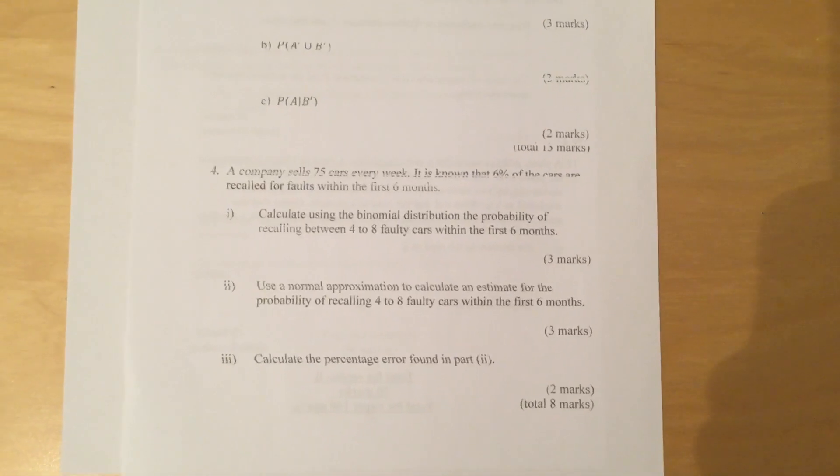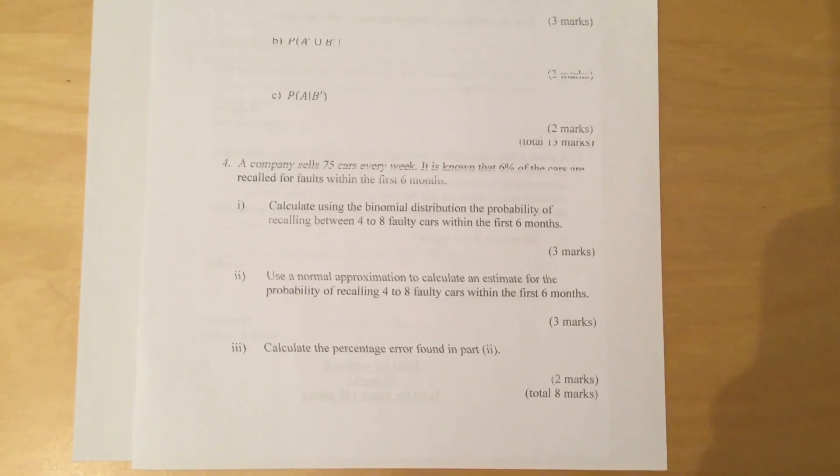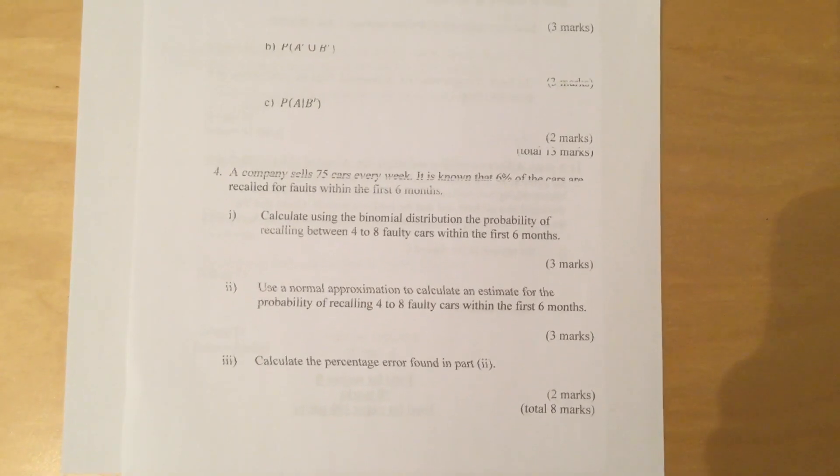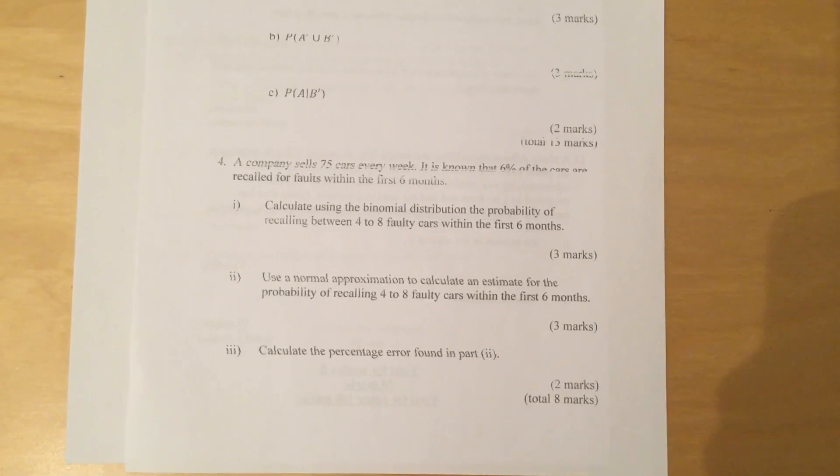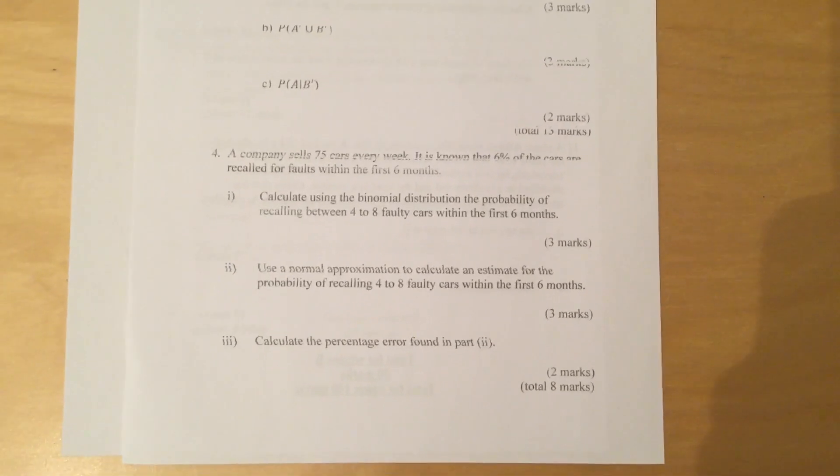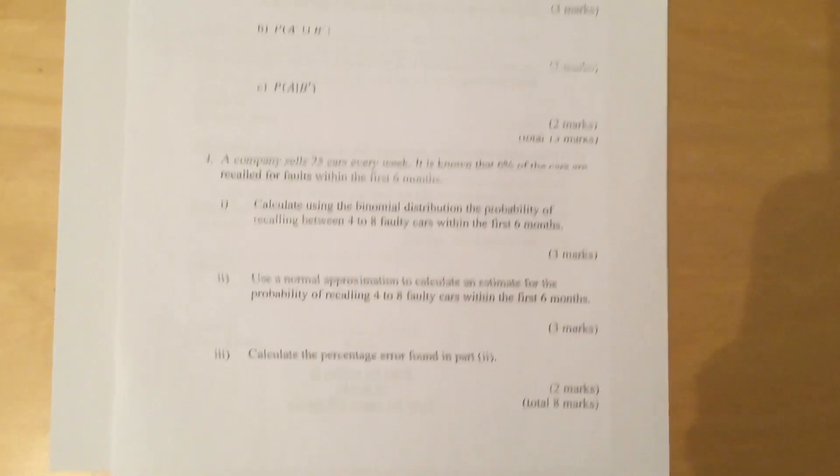Part 1: Calculate using the binomial distribution the probability of recalling between 4 to 8 cars within the first six months. Part 2: Use a normal approximation to calculate an estimate for the probability of recalling 4 to 8 cars within the first six months. Part 3: Calculate the percentage error found in part 2.